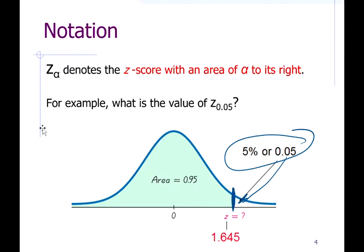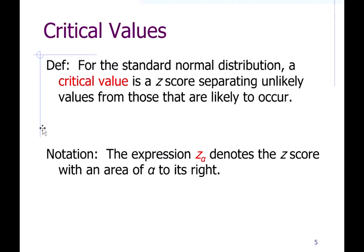These z-scores are going to be associated with our confidence interval estimates, and we call them critical values. For the standard normal distribution — the model we're using, covered in my previous video on sampling distributions and the central limit theorem — these critical values are z-scores separating unlikely values from those that are likely to occur. Loosely, we can think of them as z-scores that separate the portion of the graph corresponding to making a mistake, since our estimate could be an overestimate or an underestimate.